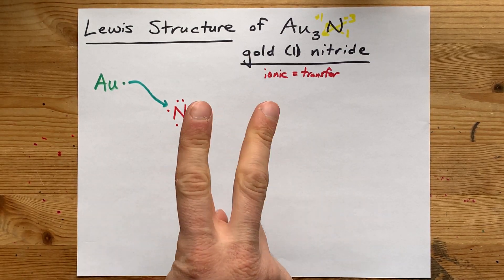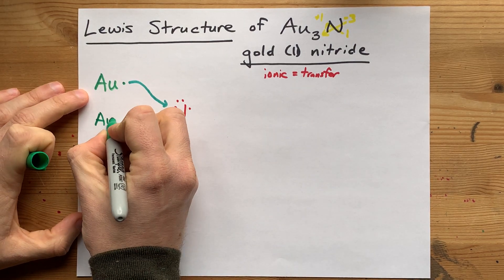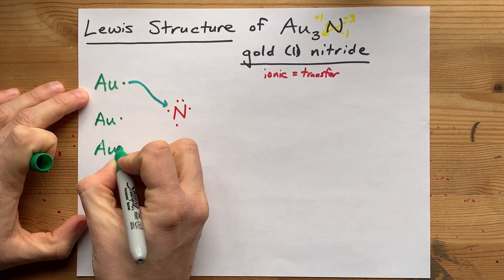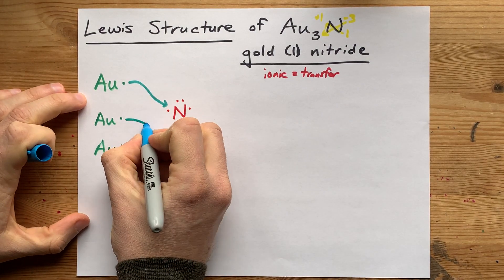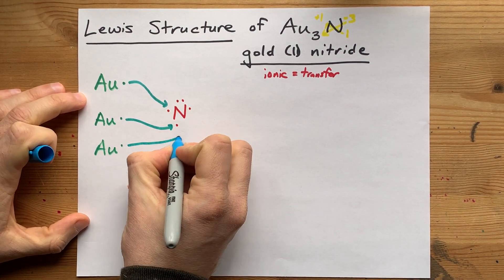Where is it going to get two more? The answer is you need two more gold atoms with their one electron each. This will donate the seventh, and this will donate the eighth.